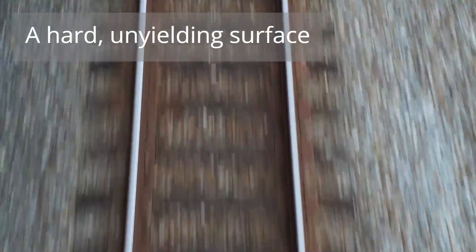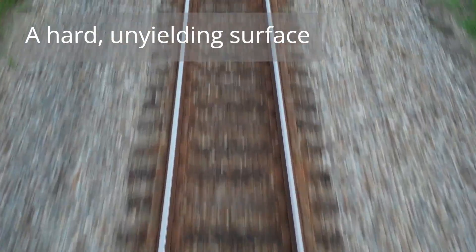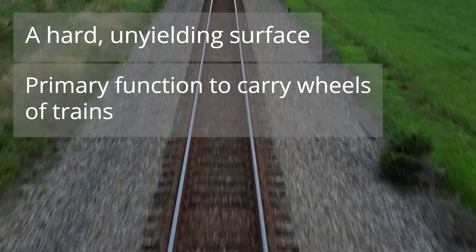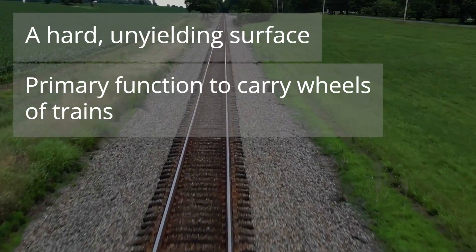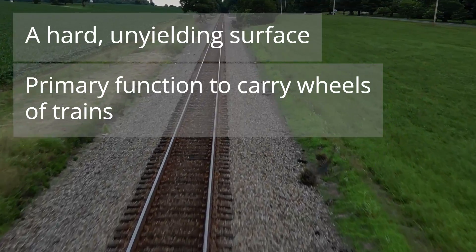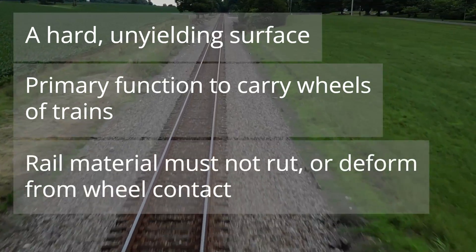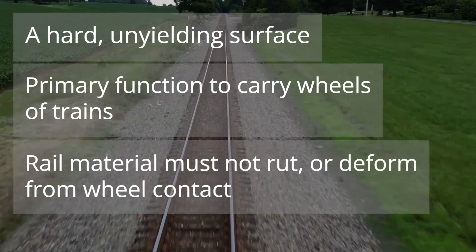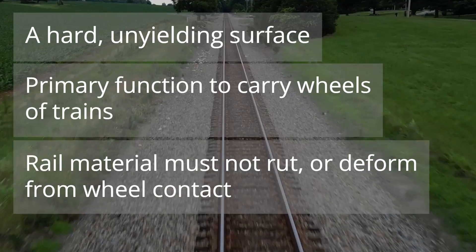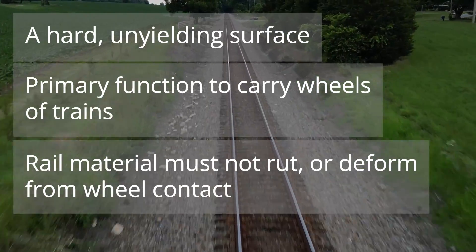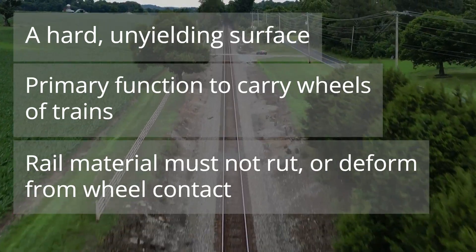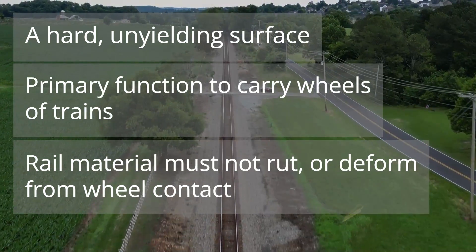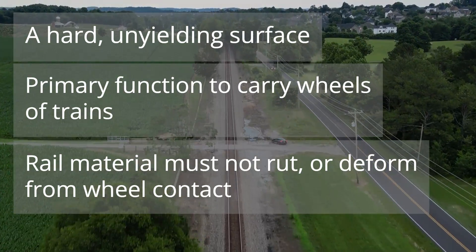First up: a hard, unyielding surface to carry wheels. The primary function of the rail is to carry the wheels of the trains. These wheels have a rigid steel tire which contacts the rail. The rail must be made of a material that is hard and unyielding so that it does not rut or deform under this load or contact. This function has remained the same since the first conception of railway tracks.